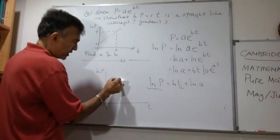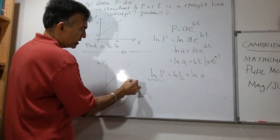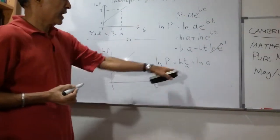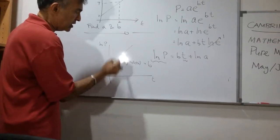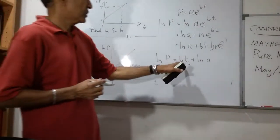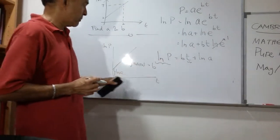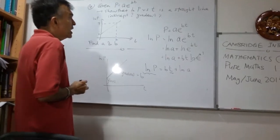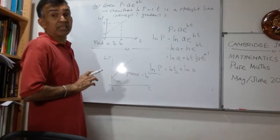And the gradient of this straight line, the gradient will be B. And the intercept here will be log A. So the gradient will be B and the intercept will be log A. Please bear in mind, we are dealing with logs to base E.